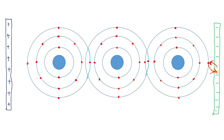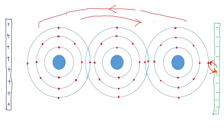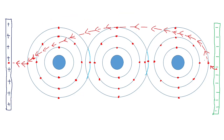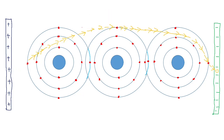As a whole process, electrons travel from the negative terminal through the semiconductor toward the positive plate, while holes travel in the opposite direction toward the negative terminal. In the diagram, electrons move from the negative terminal through each atom position to the positive plate, while holes travel in the reverse direction.